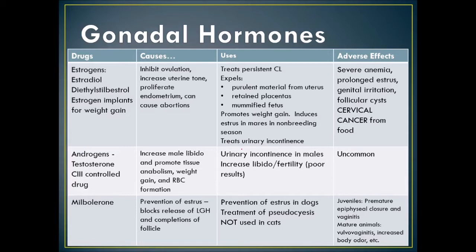Adverse effects are rare with testosterone. Mibolerone prevents estrus by blocking LH release and preventing follicle completion, so the egg is not released. It is used for prevention of estrus in dogs and treatment of pseudocyesis — false pregnancy. It is not used in cats or juveniles, where we'll see premature growth plate closure and vaginitis. In mature animals, we see vulvovaginitis and increased body odor.